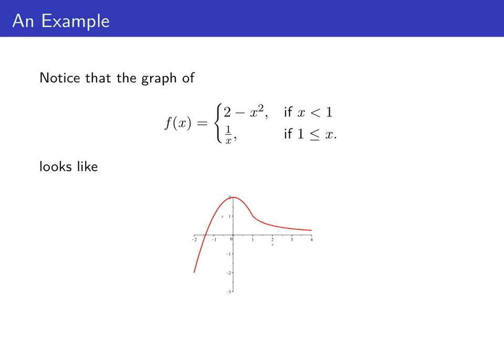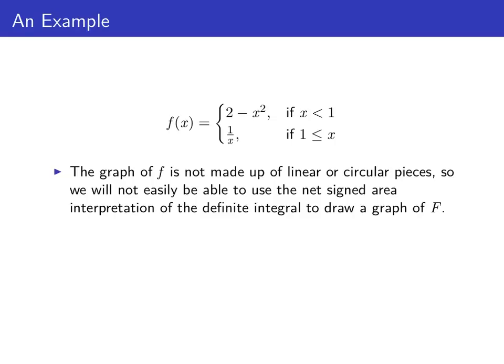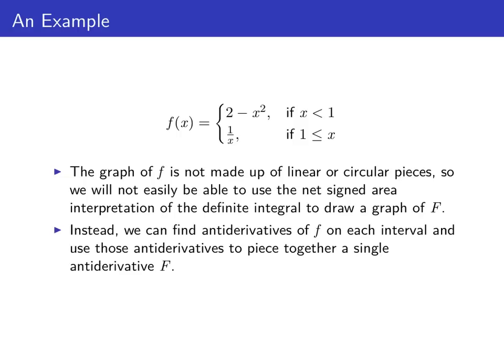The graph of little f is shown in red, and we can use this graph to determine general information about big F — where big F is increasing, decreasing, concave up, concave down. However, the graph of little f isn't made up of linear or circular pieces, so we can't easily use net signed area to get information about big F. Instead, we can find antiderivatives of little f for each piece and use those to piece together an antiderivative big F.